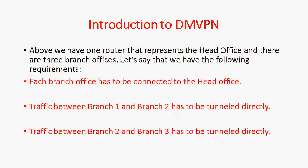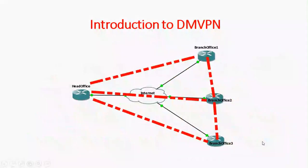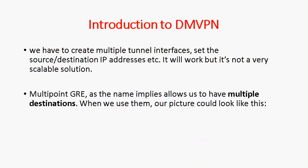As shown in the diagram, there is one router representing the head office and three branch offices. Each branch office has to be connected to the head office, and traffic between branch 1 and branch 2 and between branch 2 and branch 3 has to be tunneled directly. The red colored dotted lines represent the VPN tunnels. Totally 5 tunnels are required when using regular GRE tunnel.